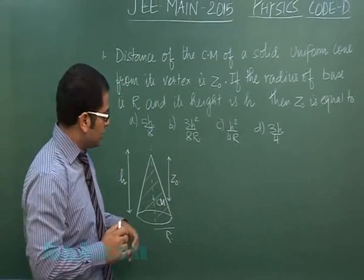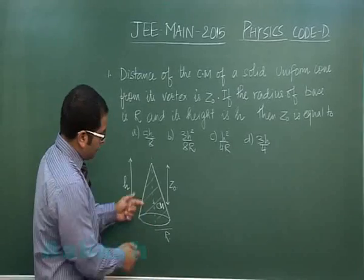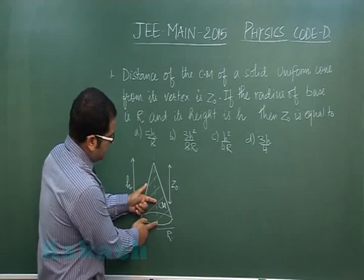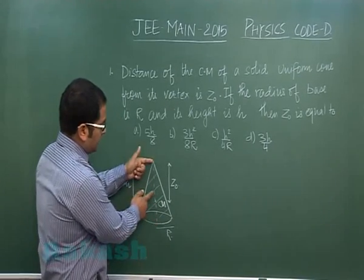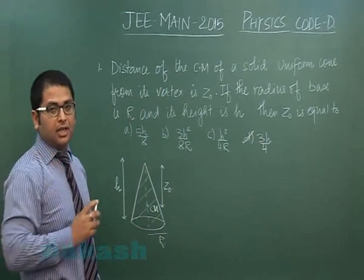It is a very common fact that is expected from all students preparing for this examination that the distance of center of mass from the base is H by 4. So quite obviously from the top that would be 3H by 4.